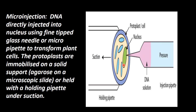This is the host cell, kept in the gel — agarose gel. In the plant, a holding pipette holds it tight, by suction, so that it will not move.